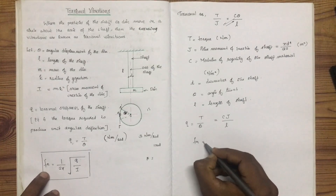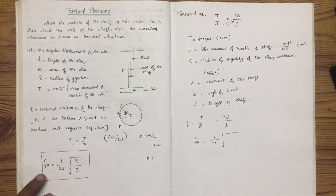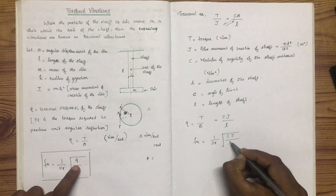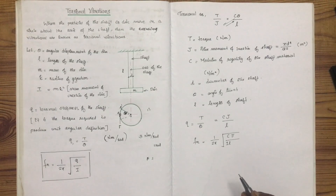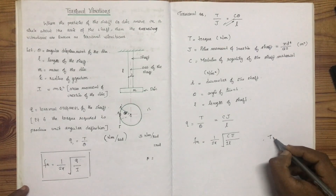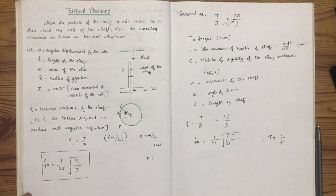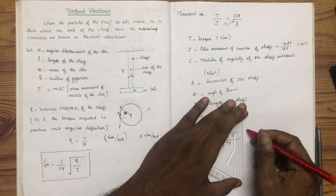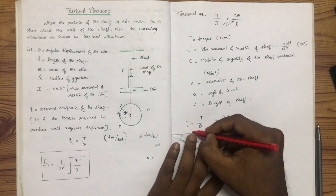Fn is the natural frequency. We can replace Q with CJ divided by L. So the natural frequency of torsional vibration is given by 1 over 2 pi times the square root of CJ divided by I times L. This is the equation for finding the natural frequency of torsional vibration.